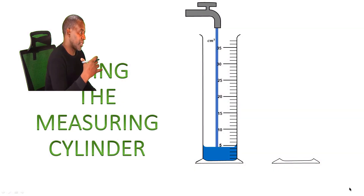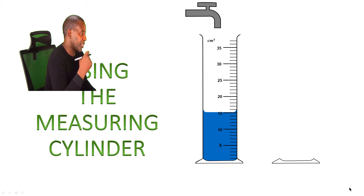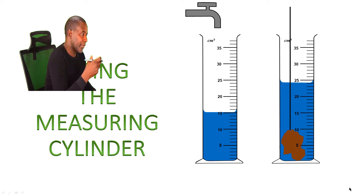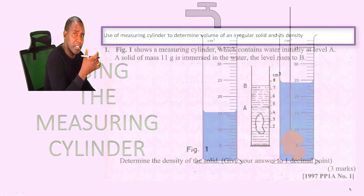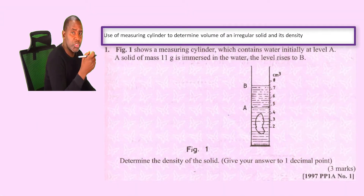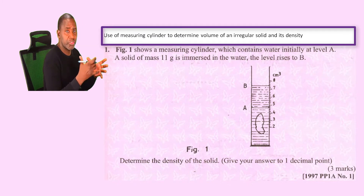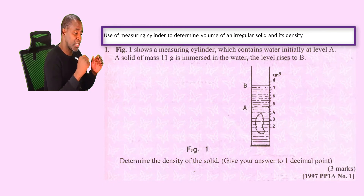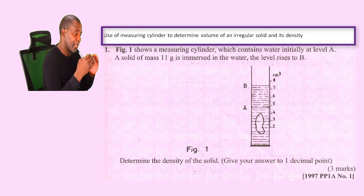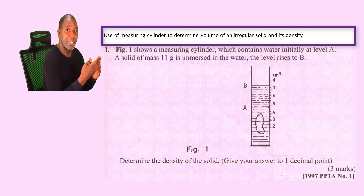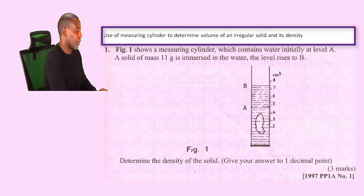In this question we want to look at the use of a measuring cylinder to determine the volume of an irregular solid as well as its density. This is the most common use of the measuring cylinder in physics. Usually when you see questions involving the measuring cylinder, expect to determine the volume of an irregular solid, and if the mass is given, they will consequently ask you to determine the density.